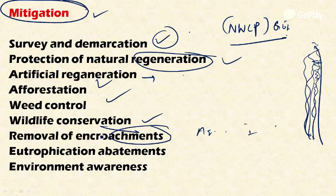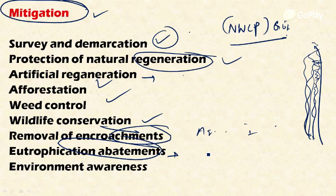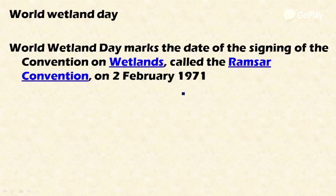Other mitigation measures include afforestation, weed control, wildlife conservation, removal of agricultural and industrial encroachments, and eutrophication abatement techniques such as preventing runoff of agricultural nutrients into water bodies and using judicious methods for fertilizer application in agricultural operations.